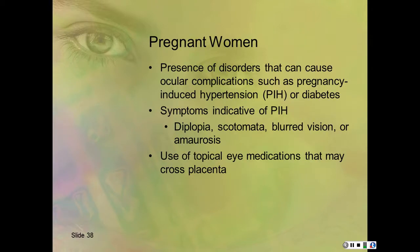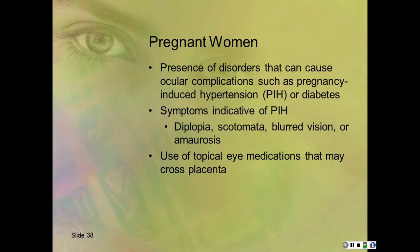For pregnant women, look for disorders causing ocular complications such as pregnancy-induced hypertension or diabetes. Symptoms of PIH include diplopia (double vision), scotomata, and blurred vision. Also discuss the use of topical eye medications that may cross the placenta, as several will.